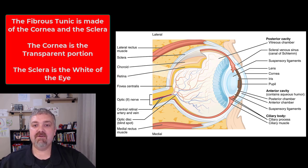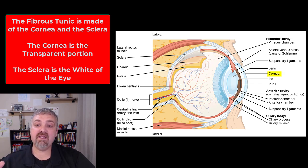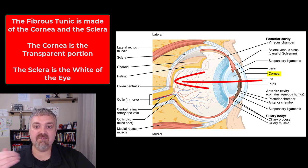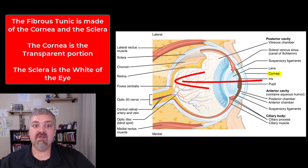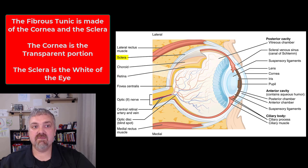Let's start with the outer fibrous tunic. There are really only two structures here: the sclera and the cornea. The cornea is the transparent portion at the front of the eye — it has to be transparent so that light can reach the retina and allow us to see. The sclera is going to be the white of your eyes. So those are the two parts of the outer fibrous tunic: the cornea and the sclera.